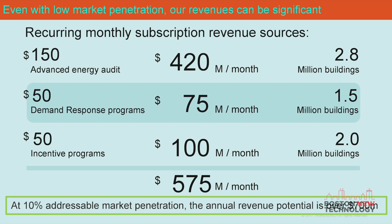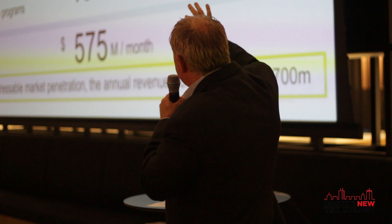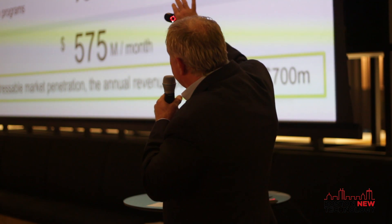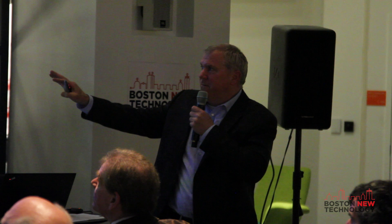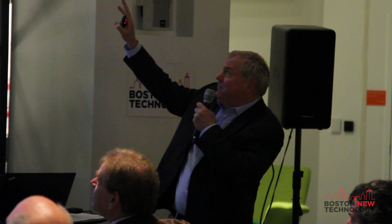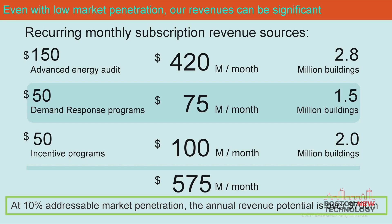Here's how we see recurring monthly revenue sources. Our advanced energy audit is $150 a month. Demand response programs and retrofit incentive programs are at $50 a month, adding up to about $500 million a month if you had all 2.8 million buildings. Even at 10% addressable market penetration, annual revenue is over $700 million.